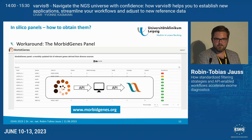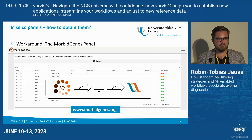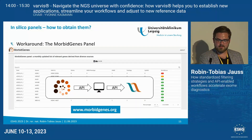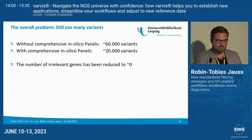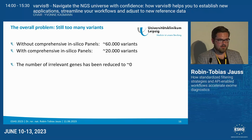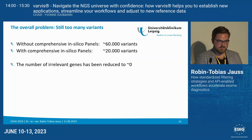The Morbid Genes Panel can easily be implemented into Varvis by using the API. You can download the set of genes with a simple script and upload it to Varvis — you do not have to type all 6,000 genes manually. With these comprehensive in silico panels, we could reduce the number of variants to interpret from 60,000 to around 20,000, reducing irrelevant genes without a disease association to zero.